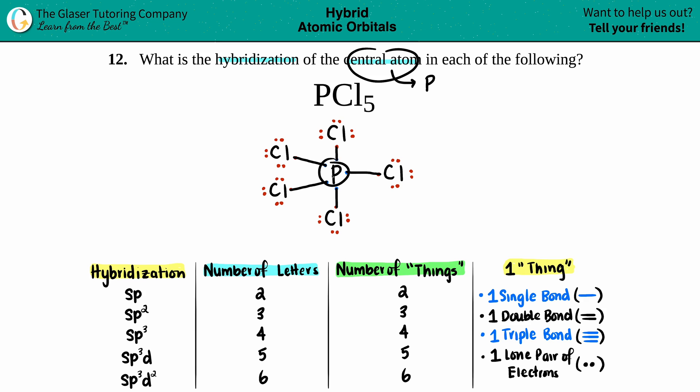When we're talking about hybridizations, there's a max of five hybridizations you got to know. Maybe your teacher or professor is nice and they only want you to memorize the first three, but it doesn't really matter because it doesn't get any harder if you just have to tackle on the two extra ones.